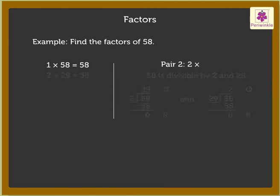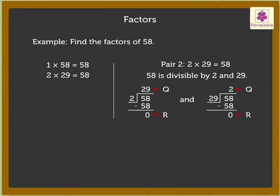The second pair of numbers which gives the product 58 is 2 into 29. Thus, the factors of 58 are 1, 2, 29, and 58.